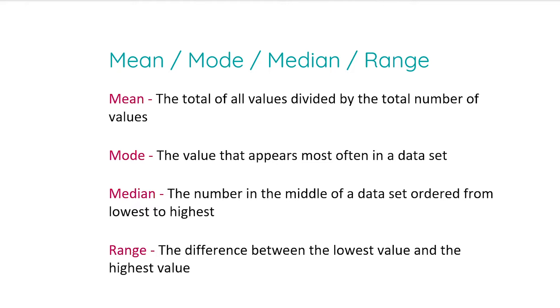The mode is just the value that appears the most often in a data set. The median is the number in the middle of a data set that's ordered from lowest to highest. And then the range is just the difference between the lowest value and the highest value. It's very straightforward there. So now let's go back and have a look at our questions.